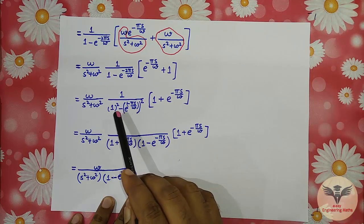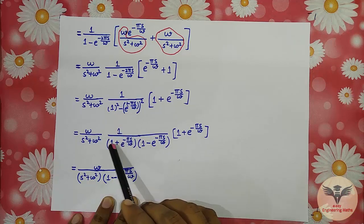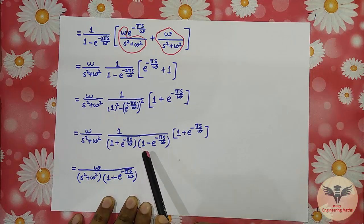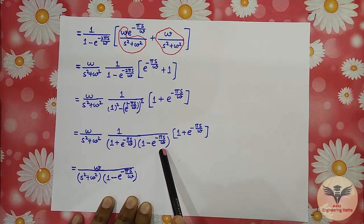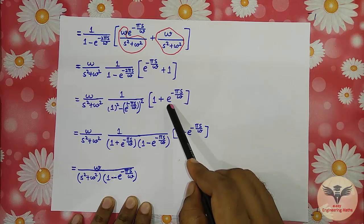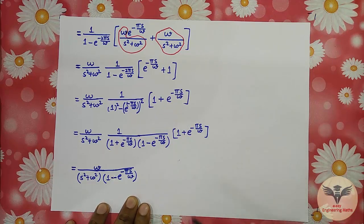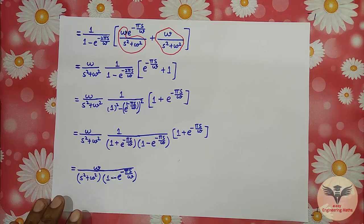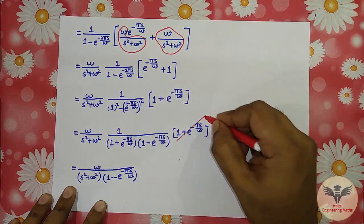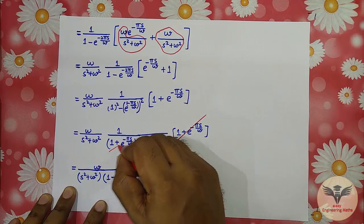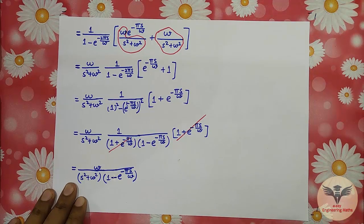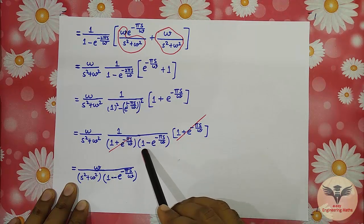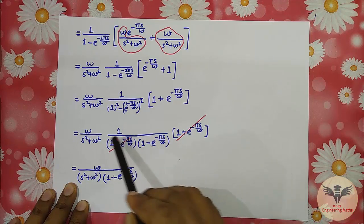Using the factorization: 1 − e^(−2πs/ω) = (1 − e^(−πs/ω))(1 + e^(−πs/ω)), we can simplify the expression. After cancellation, the final result is: L{f(t)} = ω/[(s² + ω²)(1 + e^(−πs/ω))].